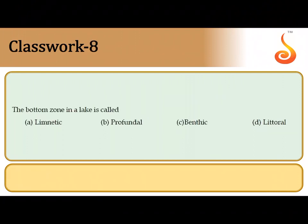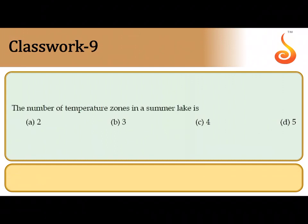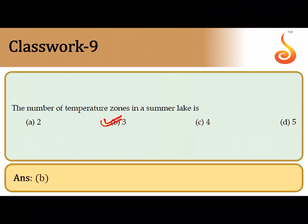The bottom zone of a lake is referred to as the benthic zone — answer is option C. The number of temperature zones in a summer lake is three: the superficial zone is the epilimnion, the middle zone with a sudden drop in temperature is the thermocline, and the lower, comparatively colder zone is the hypolimnion. There are totally three temperature zones in a typical summer lake.